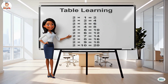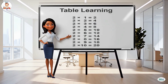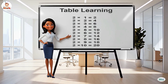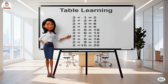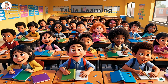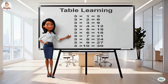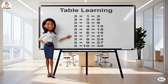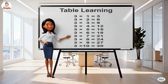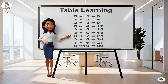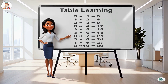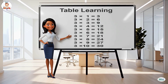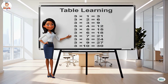Two nines are eighteen, two tens are twenty. Now let's start the table of three. Three ones are three, three twos are six, three threes are nine, three fours are twelve, three fives are fifteen, three sixes are eighteen.